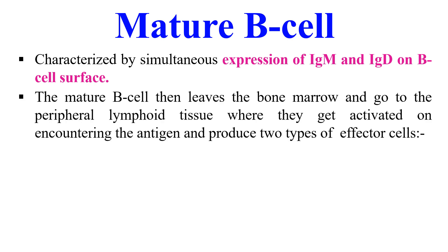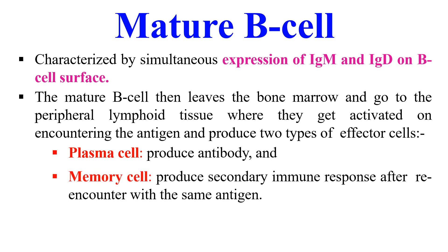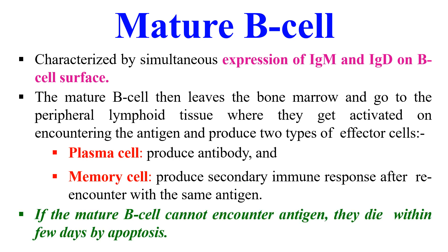The mature B cell leaves the bone marrow and goes to lymphoid tissue, where it gets activated upon encountering an antigen. After activation, it produces two types of cells: plasma B cells, which produce antibodies, and memory B cells, which mount a secondary immune response when the body encounters the same antigen again. If a mature B cell cannot encounter an antigen, it dies within a few days by apoptosis.